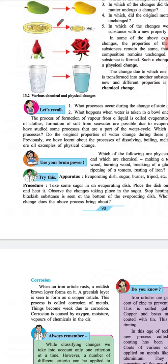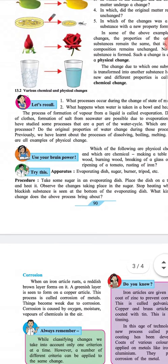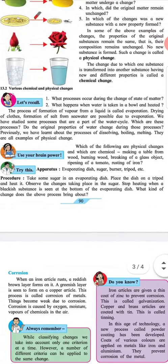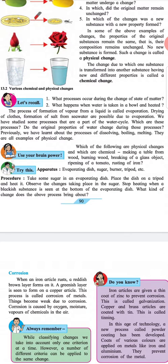Try this. Apparatus: Evaporating dish, sugar, burner, tripod, etc. Procedure: Take some sugar in the evaporating dish. Place the dish on a tripod and heat it.